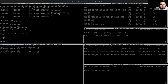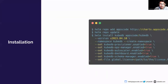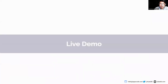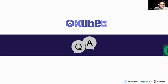So we have all 2,000 rows. In this way, we can do point-in-time recovery for a PostgreSQL database using the Postgres Archiver. This is from my end — thank you for joining. If you have any questions regarding this demo or any suggestions, feel free to ask. Thank you.